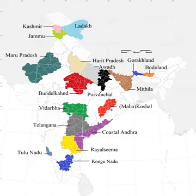The Dimasa Kachari people of northeast India have been demanding a separate state called Dimaraji or Dimaland for several decades. It would comprise the Dimasa-inhabited areas, namely Dima Haseo District, parts of Kachar district, parts of Nagan district, parts of Hojai district and Karbi Anglong district in Assam, together with parts of Dimapur district in Nagaland.